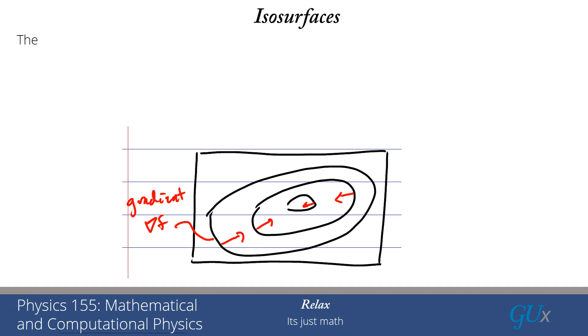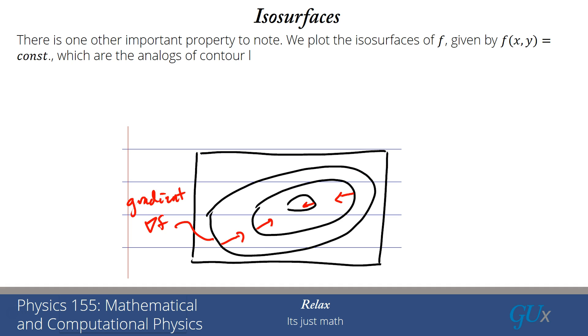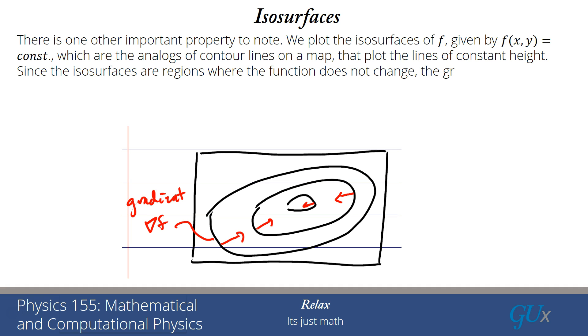There's one more point I want to make. We're going to be looking at objects called isosurfaces. An isosurface is just a curve given by f of x,y is equal to a constant. They're the analogs of contour lines on a map that plot the lines of constant height or constant elevation on the map. This is something that you're familiar with. You've seen it many times on different kinds of maps. Now, since the isosurfaces are regions where the function does not change its value, the gradient has to be perpendicular to the contour lines. Because if the gradient had any component along the contour line, that would say that along that contour line the function is changing its value. But we know the contour line is constructed by all of the points where the function does not change its value. So the gradient must be perpendicular to those isosurface lines.